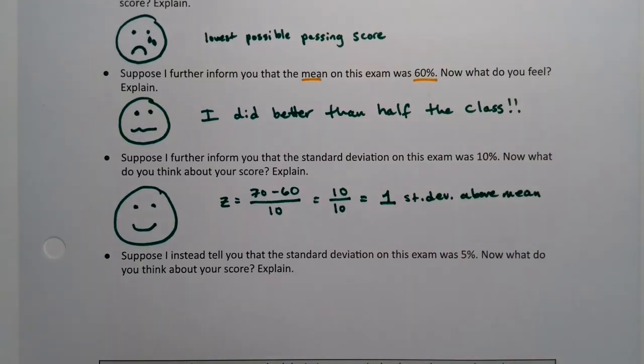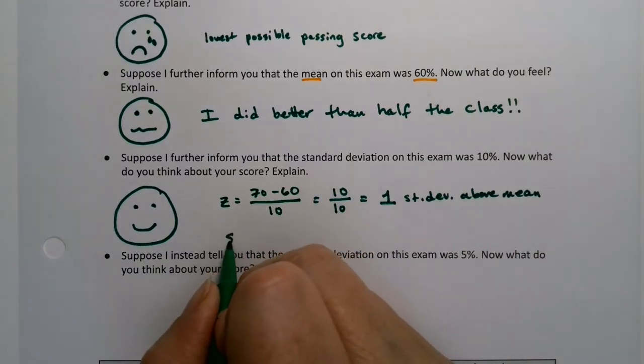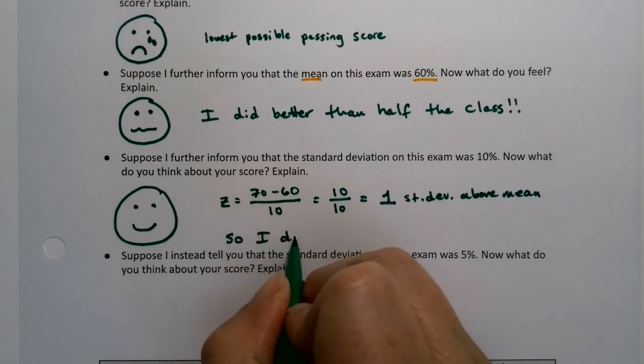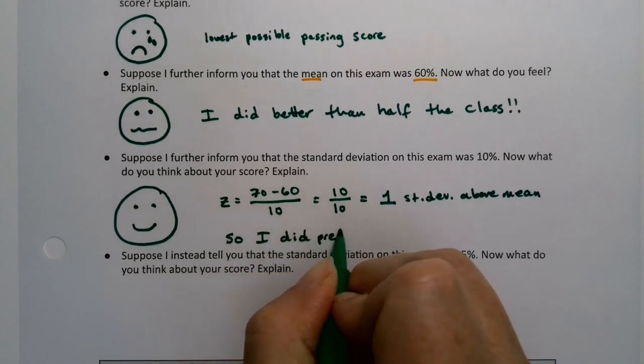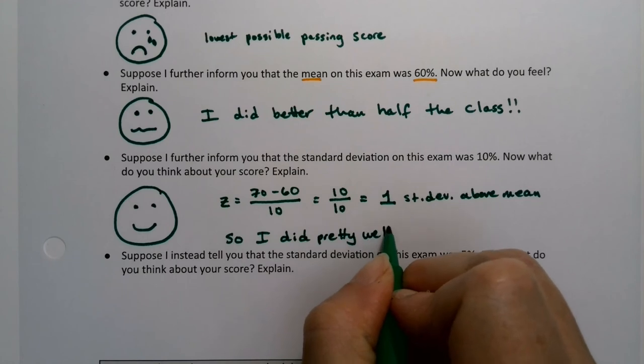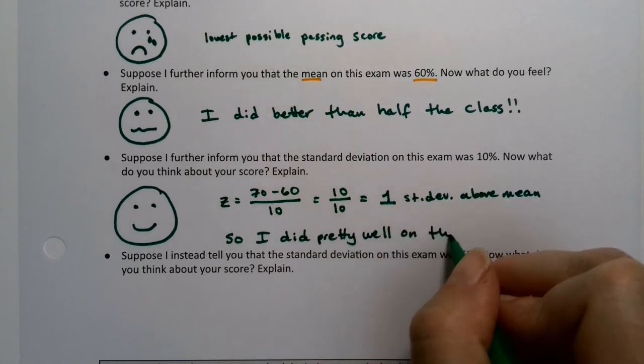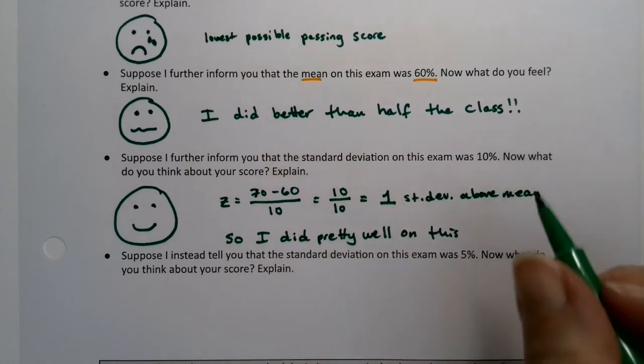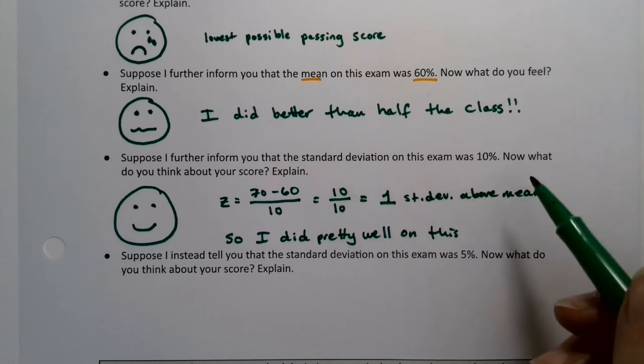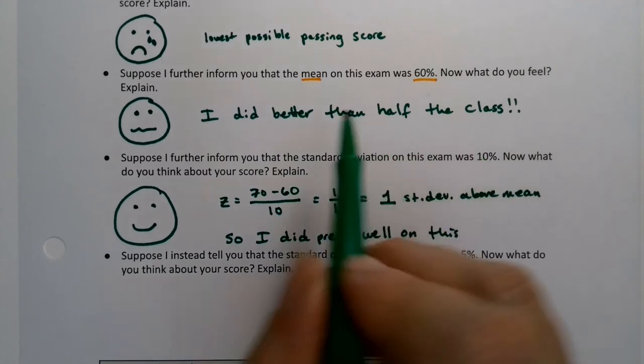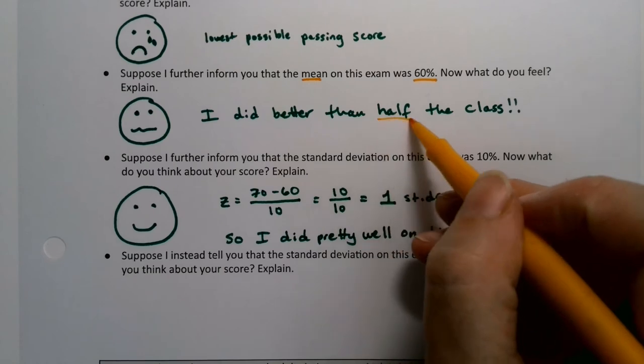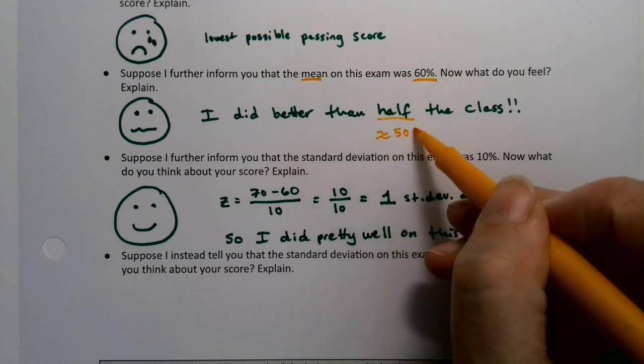So you did better, right? You're doing pretty well. So I did pretty well on this test in relation to the class. So knowing where the mean is kind of tells you, you know, you score better than 50% of the class, right? So half, you can say roughly 50% of the class, right?